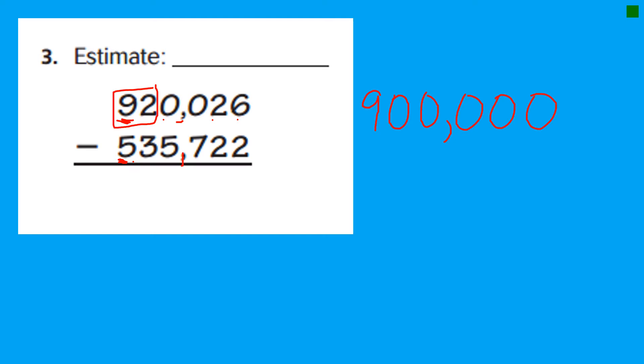So 920,026 rounds to 900,000. 535,722. Let's see. 53 is between 50 and 60 on a number line. And it is closer to 50.